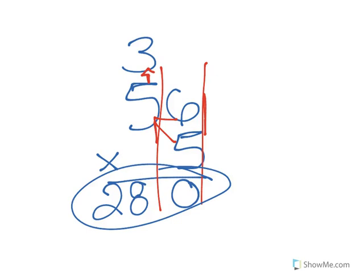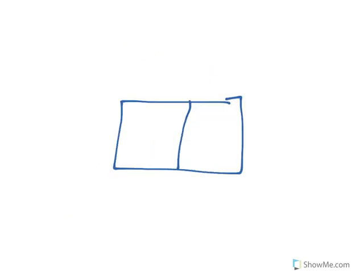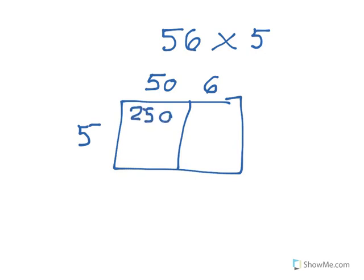Let's do the same one. 56 times five. 56 times 5. You would break up the 56 into 50 and 6. And take the 5 over here. And then you would multiply 5 times 50, which would be 250.